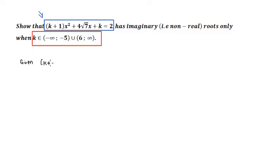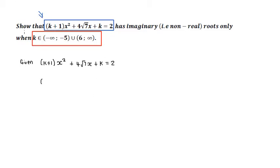Given K plus 1 times X squared plus 4 root 7 X plus K equals 2, we can rearrange this because we know that a quadratic always has to equal zero. Moving the 2 to the left-hand side gives us: K plus 1 — notice that K plus 1 is the coefficient of the X squared term — plus 4 root 7 X plus K minus 2, all equal to zero.